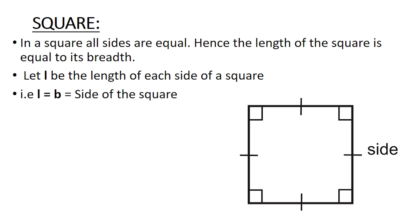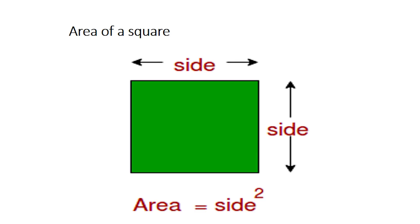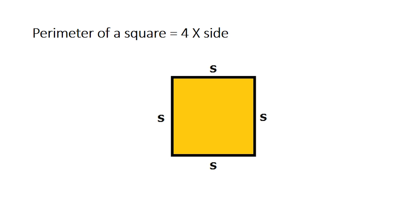Let us first understand what is a square. In a square all sides are equal, hence the length of the square is equal to its breadth. Let l be the length of each side of a square, that is l = b = side of the square. Hence we get the formula for area of a square, which is side multiplied by side, i.e., side squared.